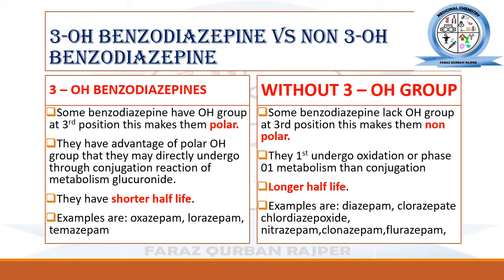Some benzodiazepines have a hydroxyl group at the third position — these are the 3-hydroxy benzodiazepines. The presence of this hydroxyl group enhances the polar characteristic of the benzodiazepine. Because they are already polar, they can directly undergo conjugation during metabolism, forming conjugates with glucuronic acid (glucuronide). That is why they have a shorter half-life. Examples are oxazepam, lorazepam, and temazepam.